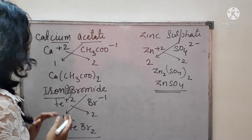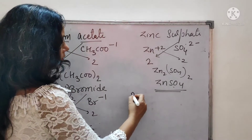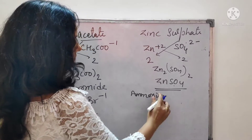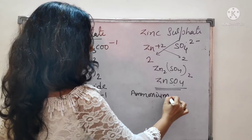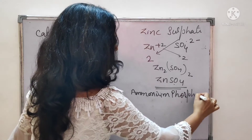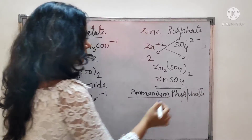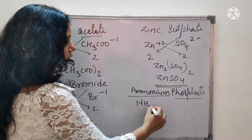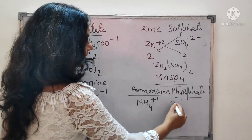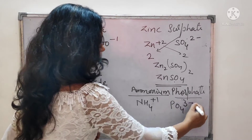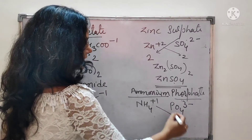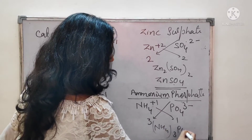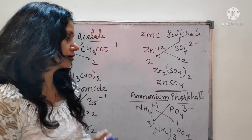Next example: ammonium phosphate. Ammonium is also a polyatomic ion, and phosphate is also a polyatomic ion. Looking at the table, ammonium is NH4+ (valency +1) and phosphate is PO4 3−. Applying the criss-cross method, the formula becomes (NH4)3PO4. This is the formula for ammonium phosphate.